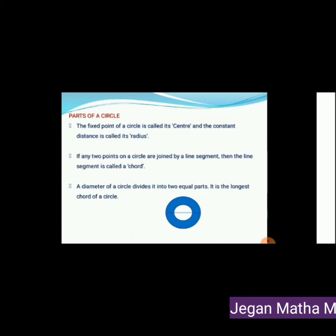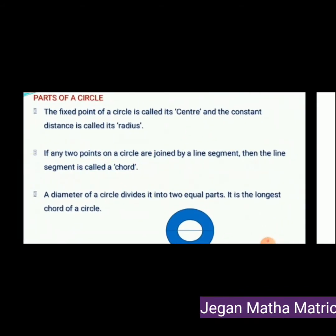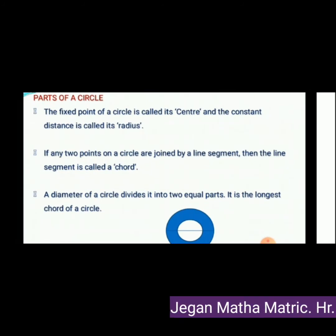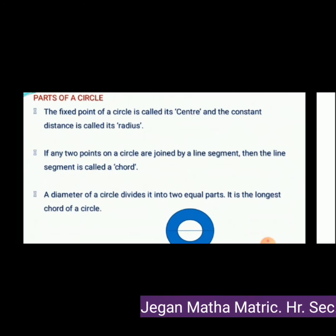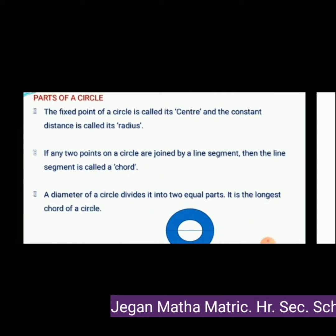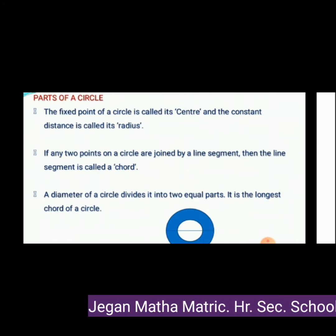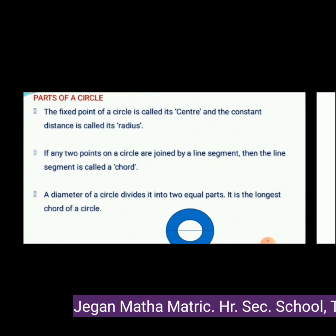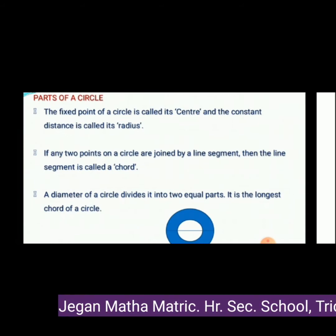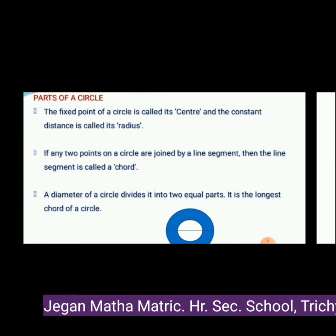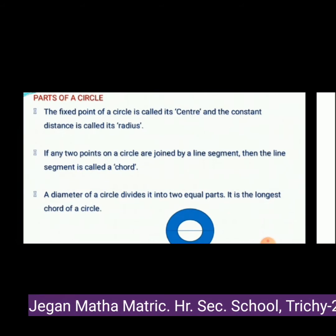Parts of a circle: The fixed point of a circle is called its center and the constant distance is called its radius. If any two points on a circle are joined by a line segment, then the line segment is called a chord. A diameter of a circle divides it into two equal parts and it is the longest chord of a circle.